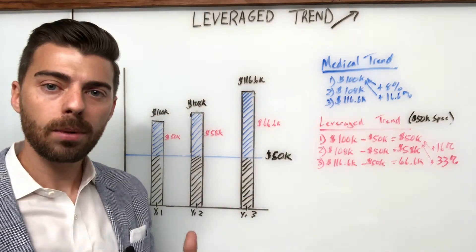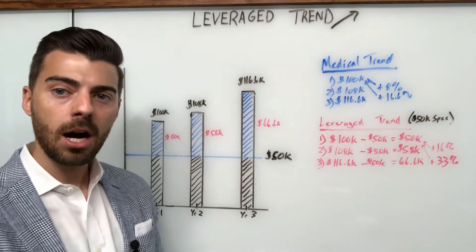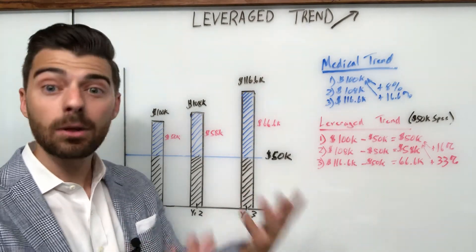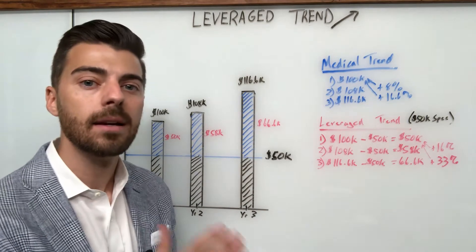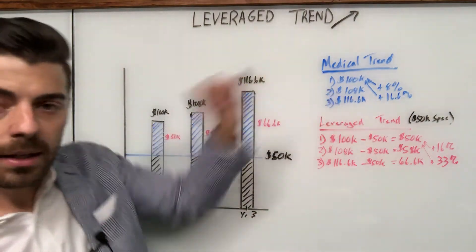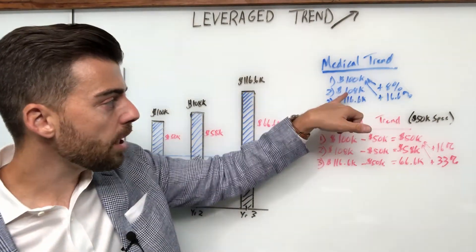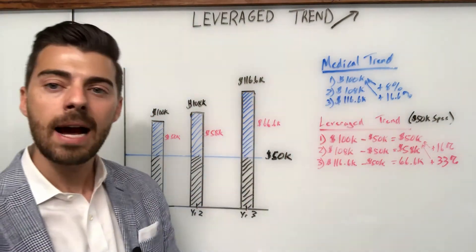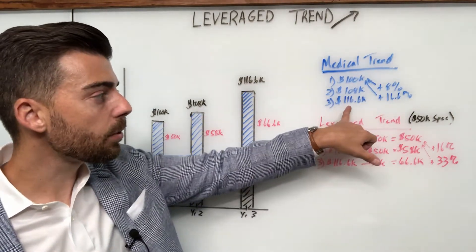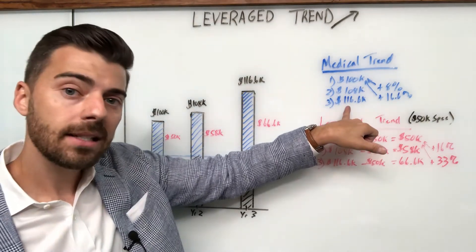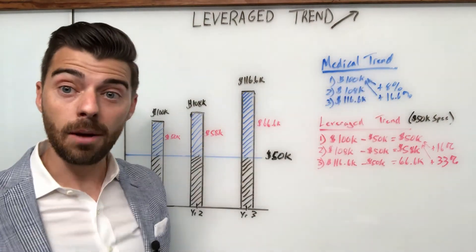Medical trend — I think we're all probably familiar with what that is. Medical trend is the notion that year-over-year the same claim is going to cost slightly more money based on medical inflation, and the most common number I've seen recently is eight percent. So let's assume eight percent medical trend. In year one, a claim costs $100,000 — no trend applied. Year two, eight percent trend is applied, so that same claim now costs $108,000. Year three, applying the same eight percent trend, that same claim now costs $116,600 — roughly a 16.6% increase from year one.